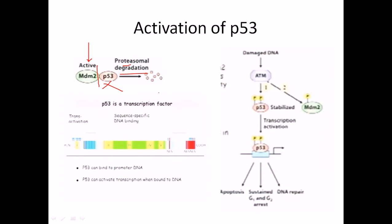This might seem like a very dumb situation — the cell is using all that ATP and energy to produce p53, then using MDM2 to degrade it. Why would a cell do this? The answer is: it is not dumb at all. Suppose a DNA damaging situation arrives during the replication stage. We need a rapid supply of p53. If p53 is not abundant inside the cell, how can we block that situation or go through the recovery process of DNA damage?